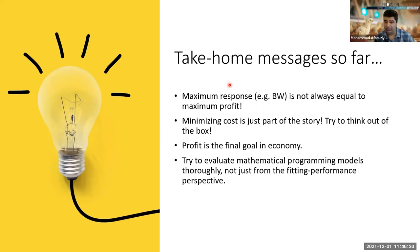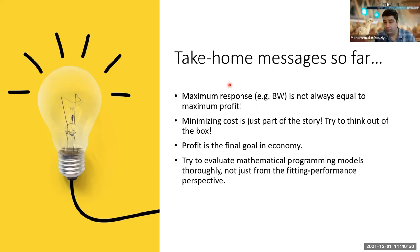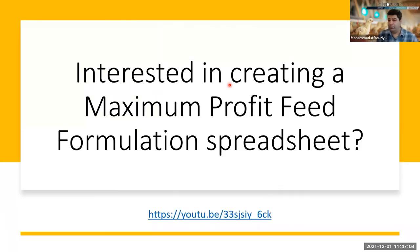To people from academia attending this webinar: when you are reviewing an article, please pay attention to these things. If a paper only reports fitting performance, give the recommendation that they need to improve it by showing predictive performance of the models. At the end of the day, we need to use these models in real life to develop manual guides. If we have unreliable models published in journals, we will see the disadvantages in our industry.